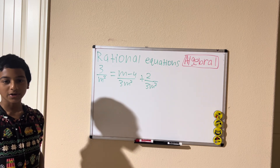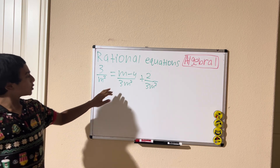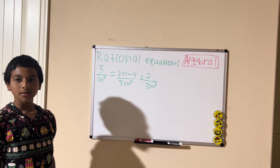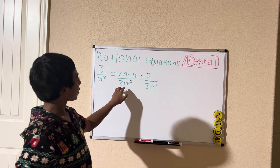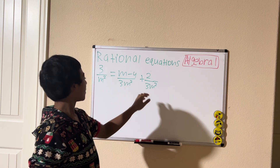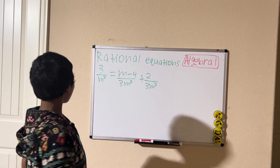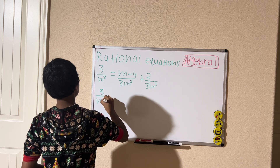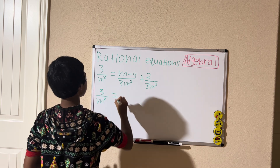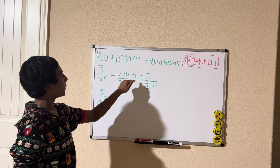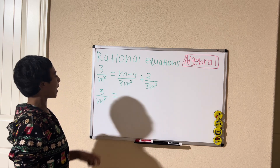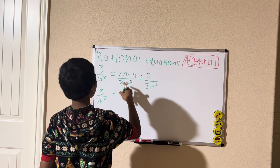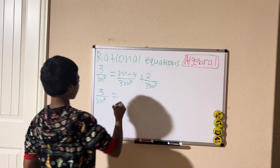We have polynomials in each of the denominators. How would you solve for m in this equation? First, I'm going to start by combining the denominators. So 3 divided by m squared equals m minus 4 plus 2 — we can combine them because they have the same denominator. So m minus 4 plus 2 is m minus 2.